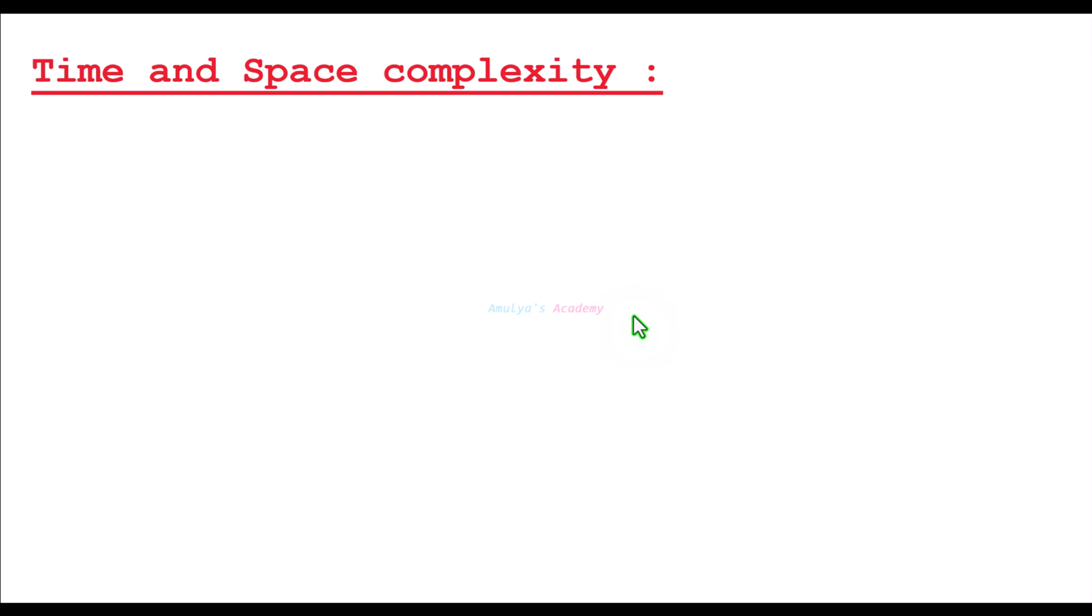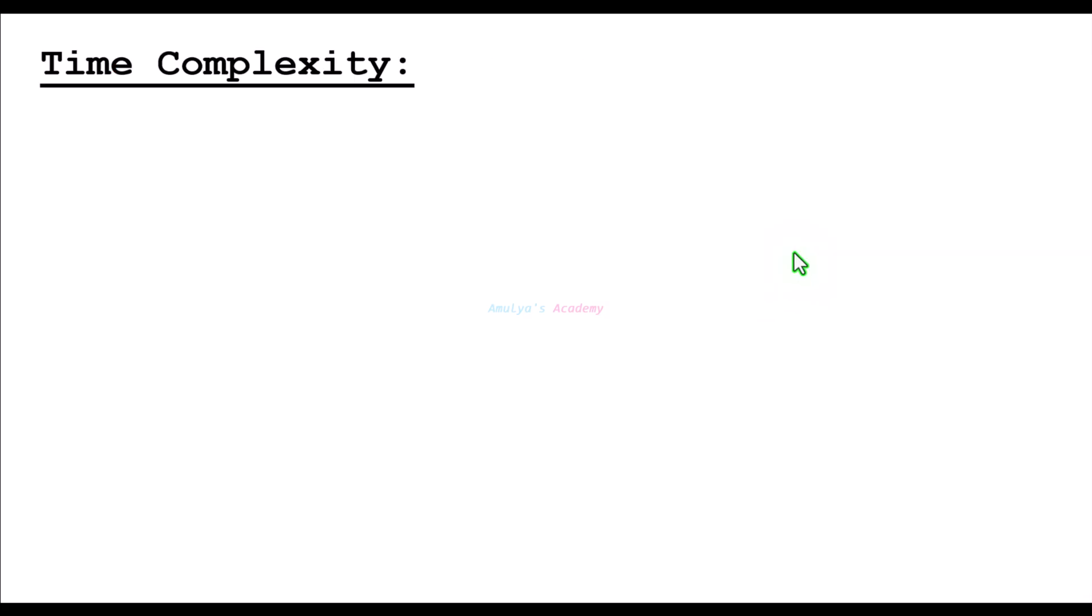Alright, first let's talk about time complexity. Time complexity tells us how the running time of an algorithm increases as the size of the input increases. Time complexity is measured by counting the number of basic operations an algorithm performs relative to the size of the input, usually represented as n.